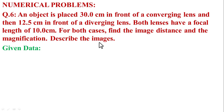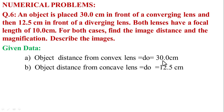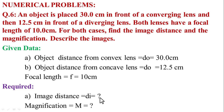In the given data, object distance from the convex lens D₀ is equal to 30 cm, and object distance from the concave lens D₀ is equal to 12.5 cm. The focal length F is equal to 10 cm, as both lenses are the same. Required: first, find the image distance Dᵢ for the first lens (convex lens), and also find the magnification M.